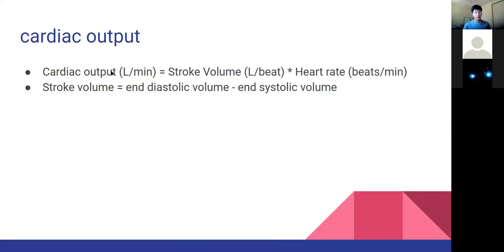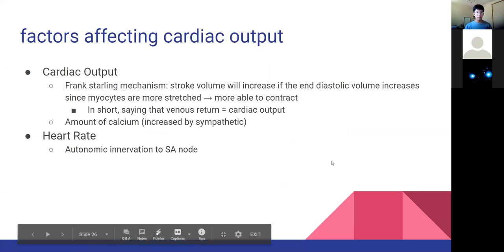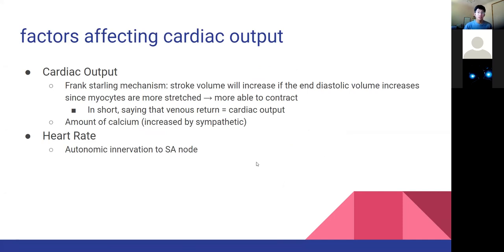Cardiac output is always equal to venous return. Two equations you should know: cardiac output equals stroke volume multiplied by heart rate in beats per minute. Stroke volume is how much blood is pumped out of the heart at every systole. Things affecting cardiac output: if we increase venous return, we increase cardiac output. Filling the heart up more stretches the heart muscles further, enabling stronger contraction - this is primarily determined by the amount of calcium. More calcium causes more vigorous contraction and increased cardiac output. Increasing heart rate also increases cardiac output.